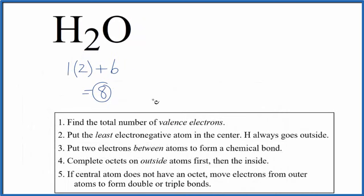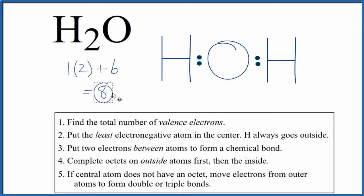When we draw Lewis structures, hydrogen always goes on the outside. So we'll put oxygen in the middle and then hydrogen on either side. Next, we put a pair of electrons between atoms and that forms the chemical bonds. So we'll put 2 here between the hydrogen and oxygen and then 2 over here. We've formed our chemical bonds. We've used a total of 4 valence electrons. We have 8.